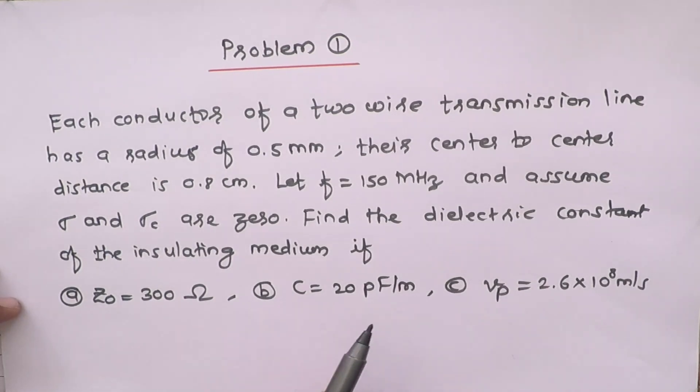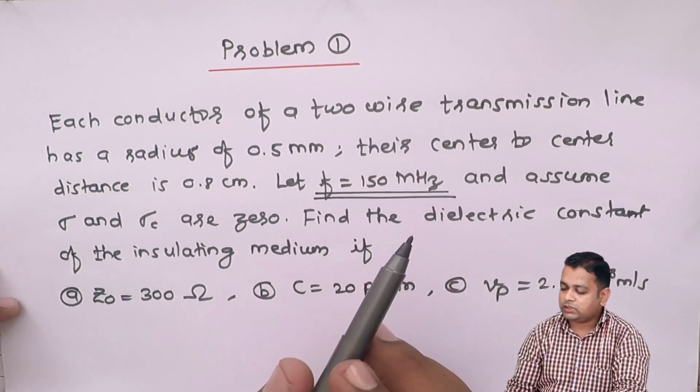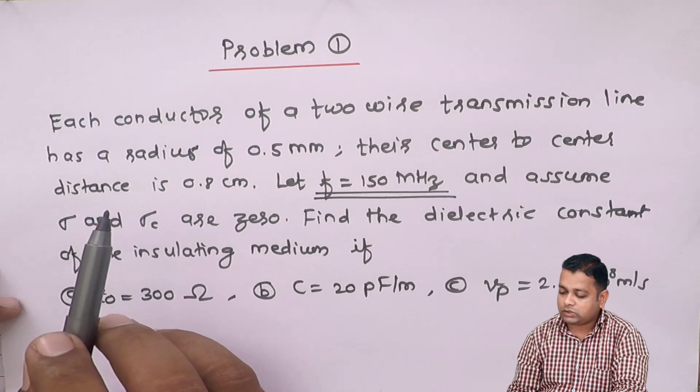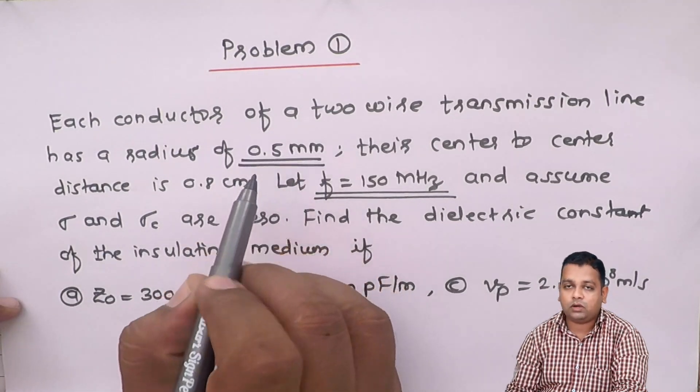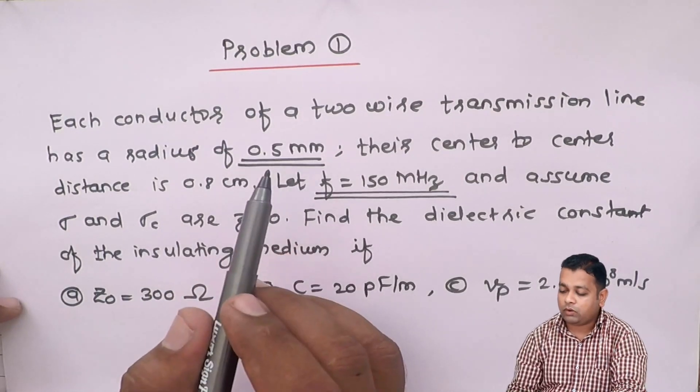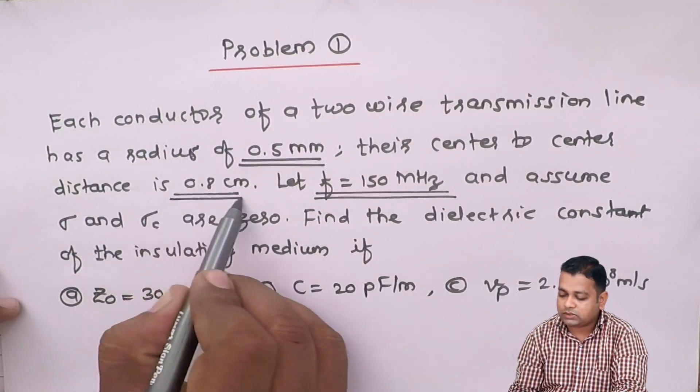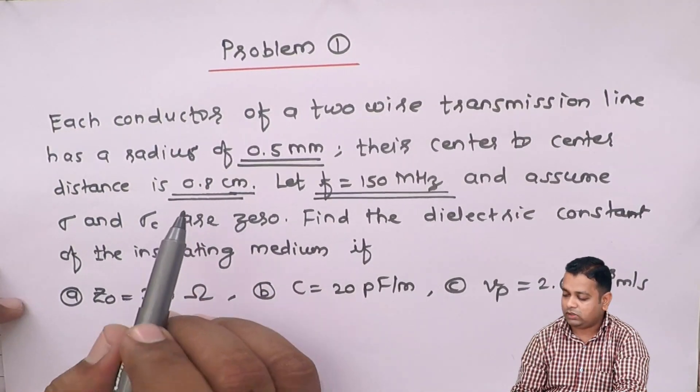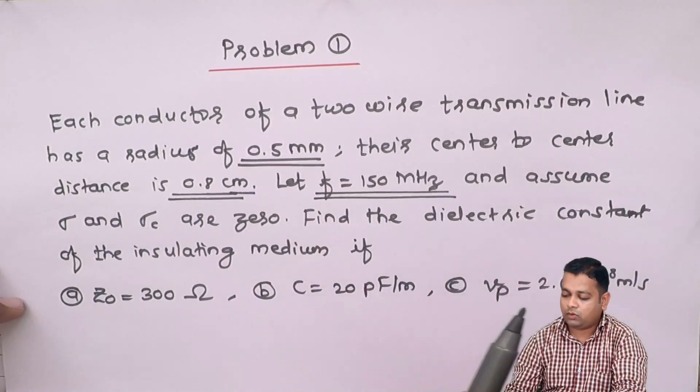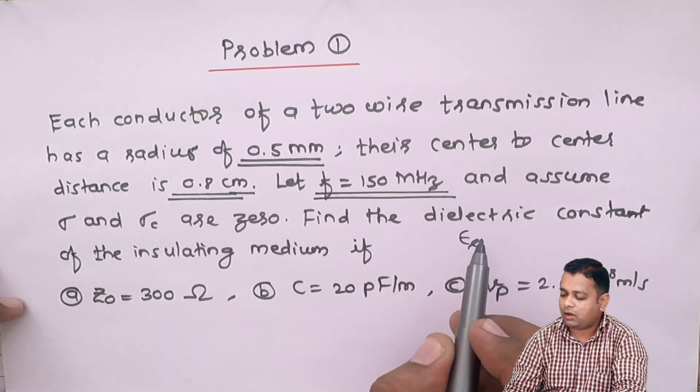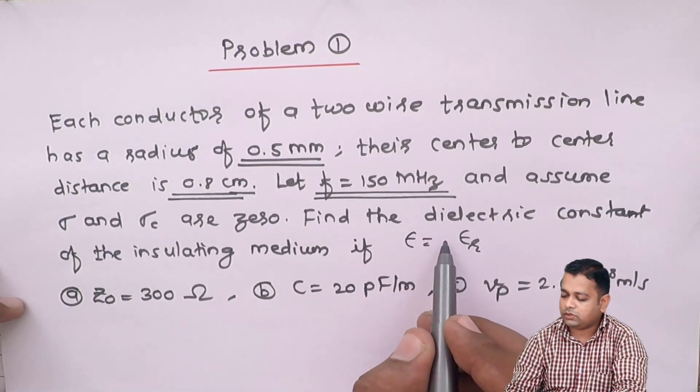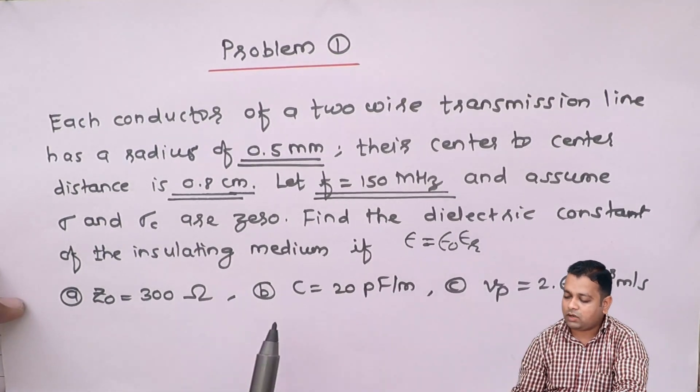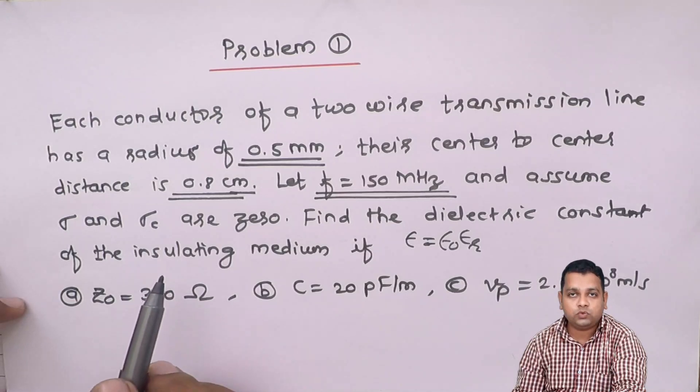This problem statement is very simple. The frequency for the propagation is given to us as 150 megahertz. The dimensions of this two-wire transmission line are given. The cross-sectional radius for both conductors is 0.5 millimeters, and the distance of separation is 0.8 centimeters, which is 0.8 times 10^-2 meters. Now here we require the dielectric constant. We shall be determining the dielectric constant for the insulating medium that separates these two wires.